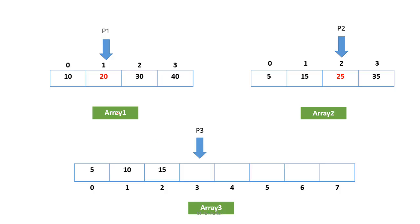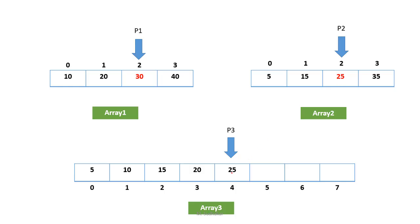Now compare 20 and 25 — 20 is minimum. Copy 20 to array 3, from array 1. Increment p1 and p3 by 1 position. Then copy 25 to array 3, from array 2. Increment p2 and p3 by 1 position. Now compare 30 with 35 — 30 is minimum. Copy 30 to array 3, from array 1. P1 and p3 are incremented by 1.